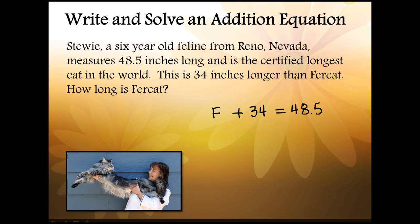Then we need to isolate the variable f. In order to do that we will need to subtract 34 from both sides of the equation. And when subtracting decimals we have to remember to line them up. We can always add a zero to keep everything nice and neat. On the left side we're left with our variable f and on the right side we have 14.5. Fercat is 14.5 inches long. We can always check our answer by adding 34 plus 14.5 and confirming that it does in fact equal 48.5.